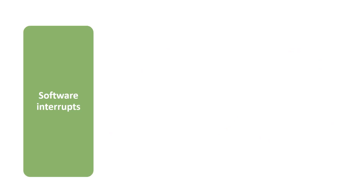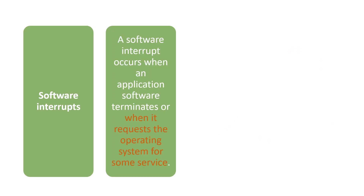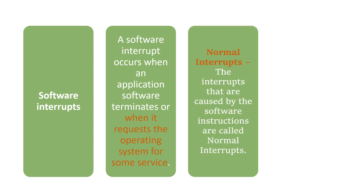Now we can see what are software interrupts. A software interrupt occurs when an application software terminates, when it requests the operating system for some service, or when some exceptional error has occurred. Software interrupts are again classified into normal interrupts and exceptions.